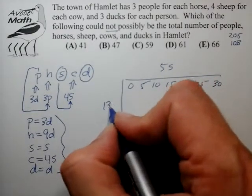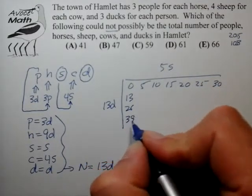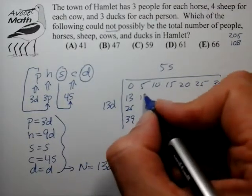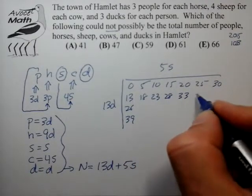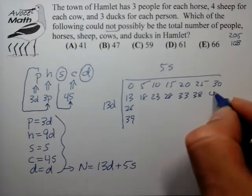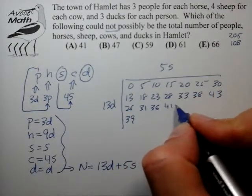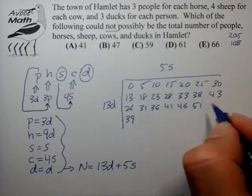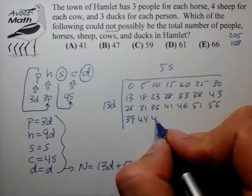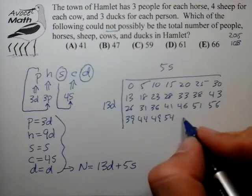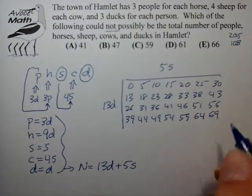The 13D can contribute with 0, 13, 26, 39. And then we have to do all the addition terms. It's not too hard to just fill out this table because the patterns are pretty easy to see. 31, 36, 41, 46, 51, 56, 44, 49, 54, 59, 54, 69. Okay.